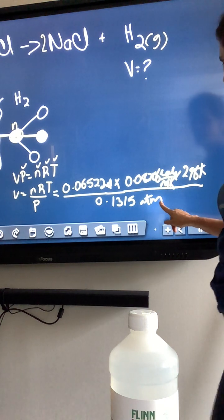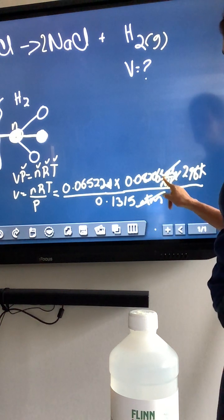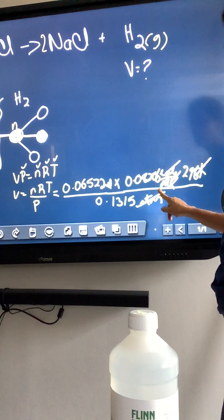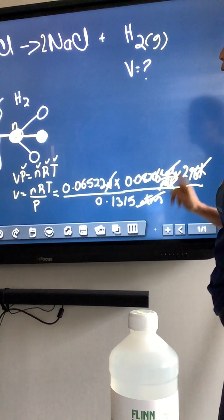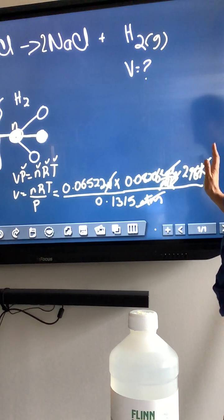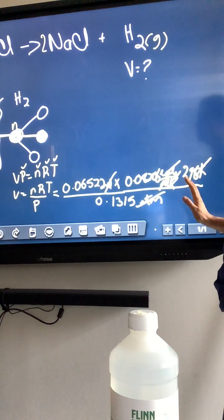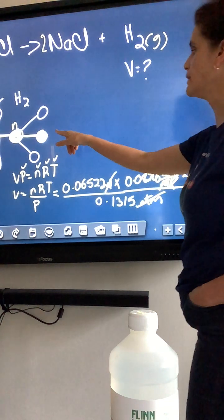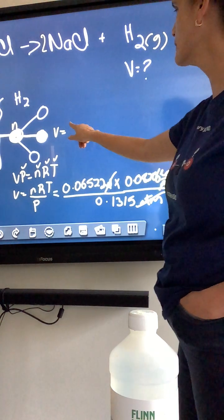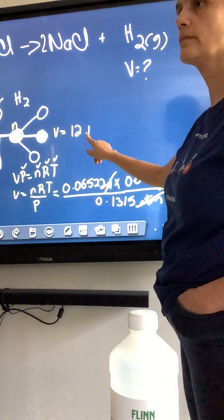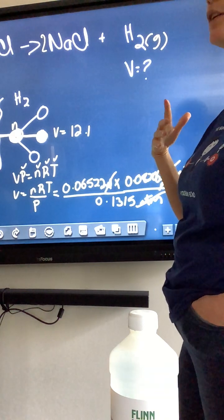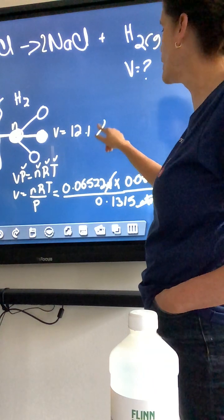So, this is going to be number of moles, 0.0652 moles, 0.08206 liter atmosphere mole Kelvin. And yes, you have to write it every time, times your temperature, 298 Kelvin, divided by the pressure, 0.1315 atmospheres. And you end up with atmospheres and atmospheres cancel, Kelvin and Kelvin cancels, moles and moles cancel. The only thing that I should see is still standing is the liters.